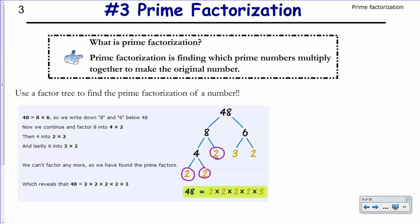So I want to be sure that I have circle numbers at the end of every little branch. So now 6. 2 times 3 equals 6. So I can circle my 3 and I can circle my 2 because those are all prime numbers.